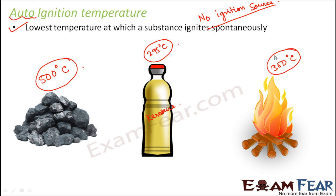So both flashpoint and auto-ignition temperature indicate the combustibility of a substance. Knowing these values, we can predict which substances will catch fire more easily than others.